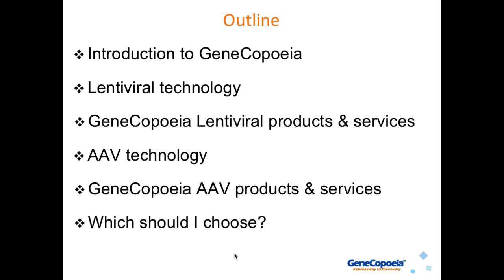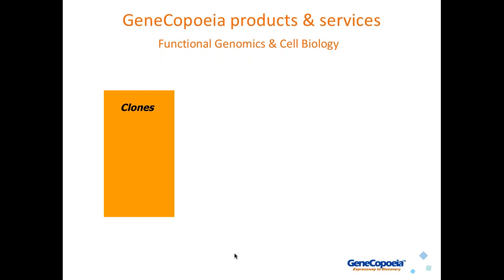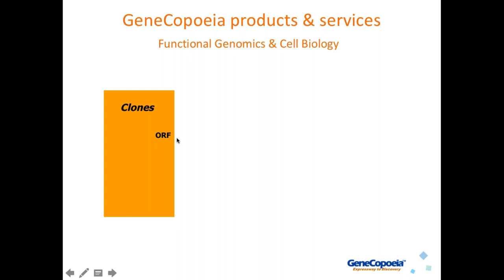GeneCopia was founded back in the late 90s as a company that provides a large array of product lines for functional genomics and cell biology. Most prominently, this has been in the area of DNA clones — mostly open reading frame or ORF clones. These are ready-to-express plasmids intended for mammalian expression, but also for bacteria and other systems like baculovirus. The ORF clones contain open reading frame information that lacks both the 5' and 3' UTRs, and they are ready to express in mammalian cells, fully sequenced, verified, and come with a variety of tags and promoters.